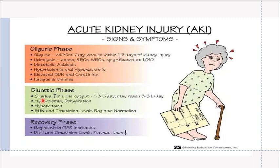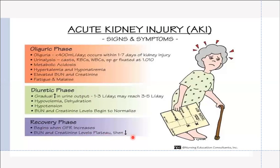In the diuretic phase, there is a gradual increase in urine output — one to three liters per day, potentially up to three to five liters per day. The client becomes hypovolemic, dehydrated, and hypotensive from fluid loss. BUN and creatinine levels begin to normalize. In the recovery phase, GFR increases and BUN levels plateau then drop as the client begins to recover.